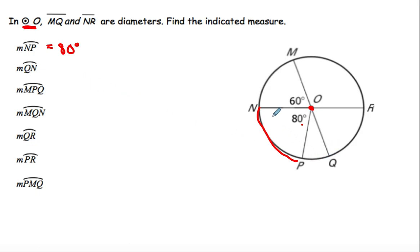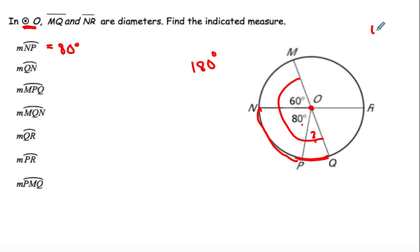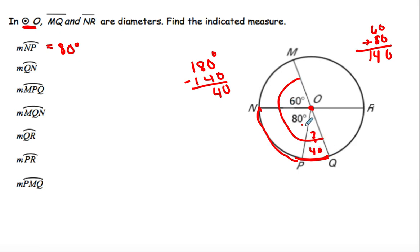For arc QN: QN extends it a little bit, so we have to find that angle. This whole side is 180. We do 180 minus the sum of 60 plus 80. Since 60 plus 80 is 140, we subtract: 180 minus 140 gives us 40 for that little piece. So if we want arc QN, we add 40 plus 80, which is 120.